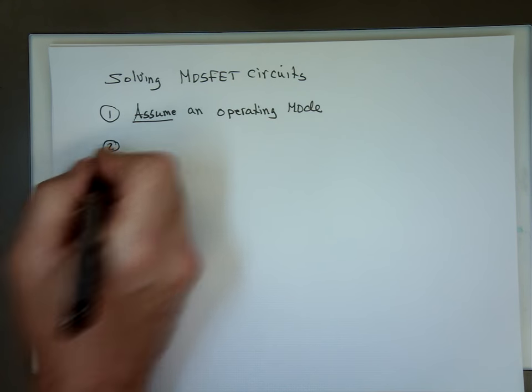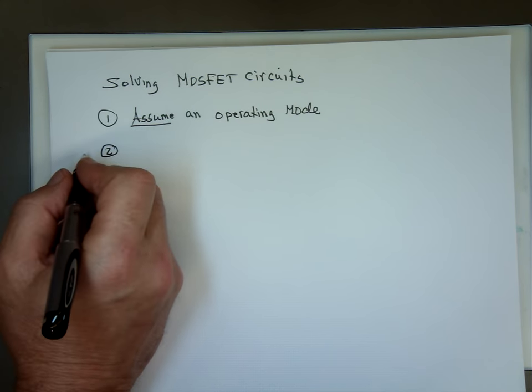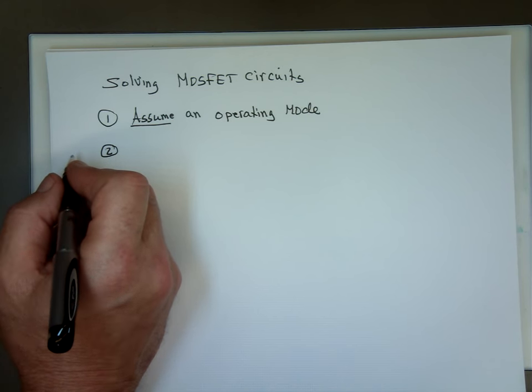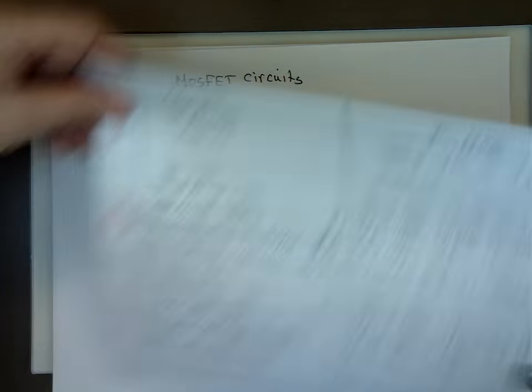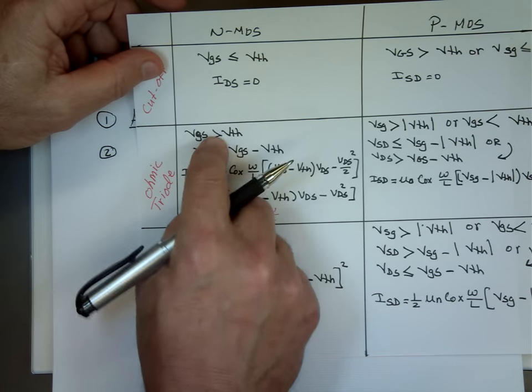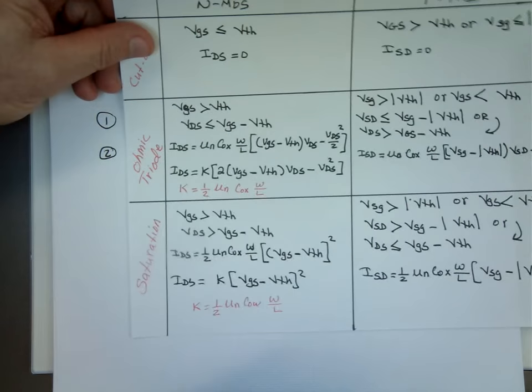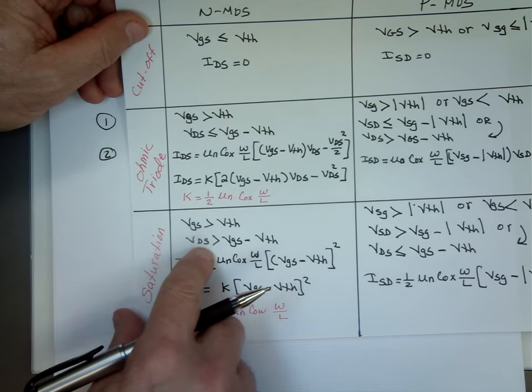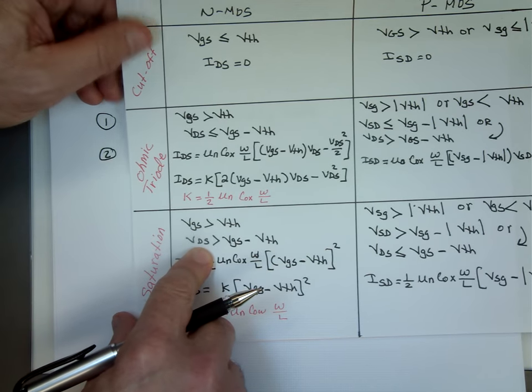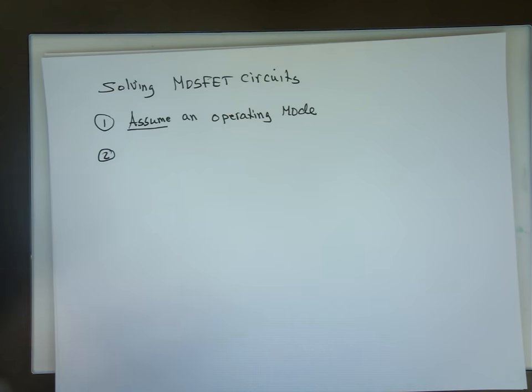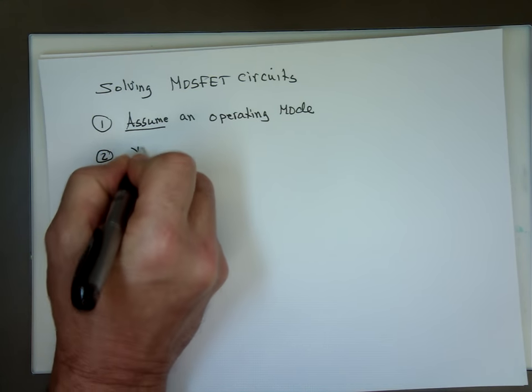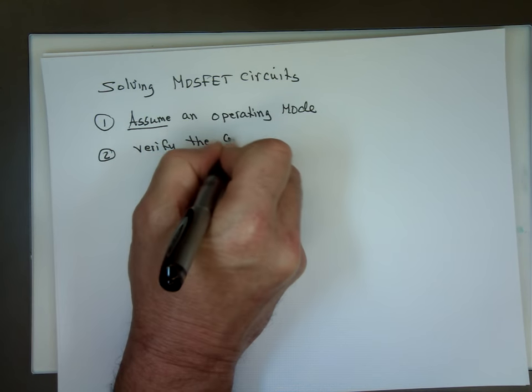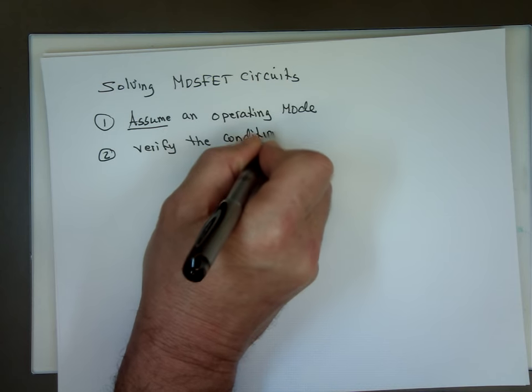Once you make the assumption, let me take you back to this one. If we assume it's in ohmic mode, that means I got to satisfy this condition and this condition. If I assume I am in saturation mode, I need to satisfy this condition and that condition. So we need to verify the conditions.